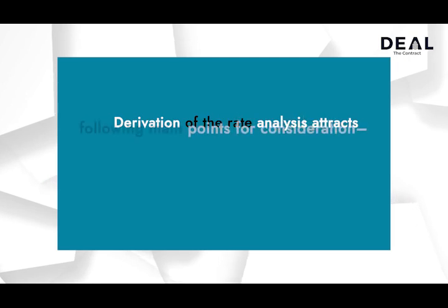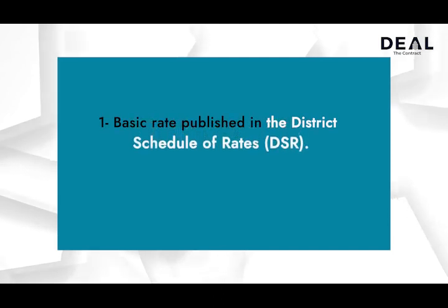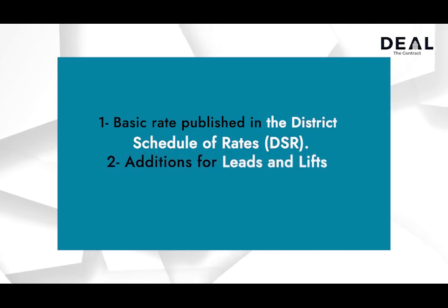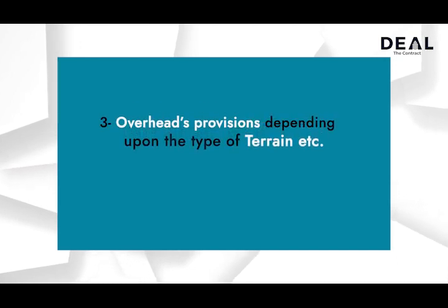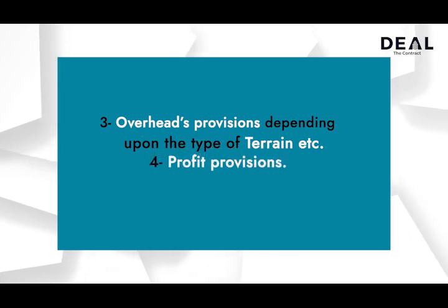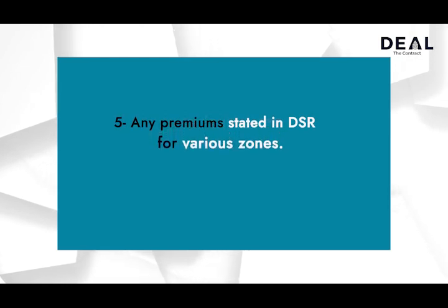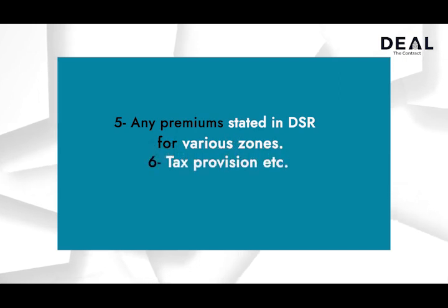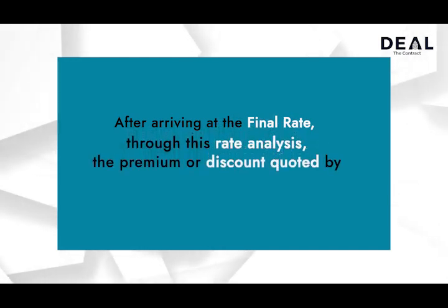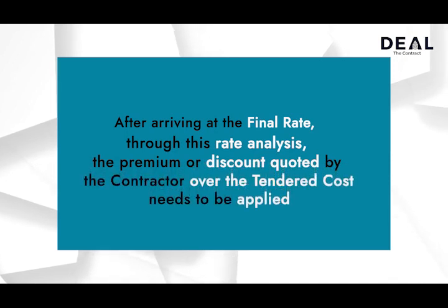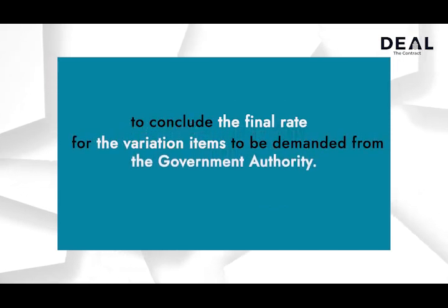Derivation of the rate analysis attracts the following main points for consideration: 1. Basic rate published in the district schedule of rates. 2. Additions for leads and lifts on top of basic rates from the DSR. 3. Overheads provisions depending upon the type of terrain, etc. 4. Profit provisions. 5. Any premiums stated in DSR for various zones. 6. Tax provisions, etc. After arriving at the final rate through this rate analysis, the premium or discount quoted by the contractor over the tendered cost needs to be applied to conclude the final rate for the variation items to be demanded from the government authority.